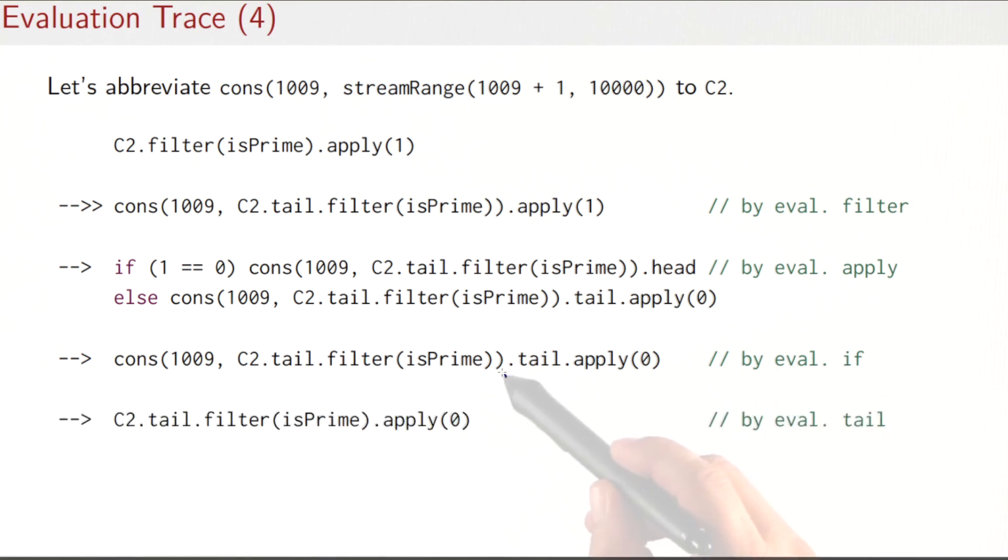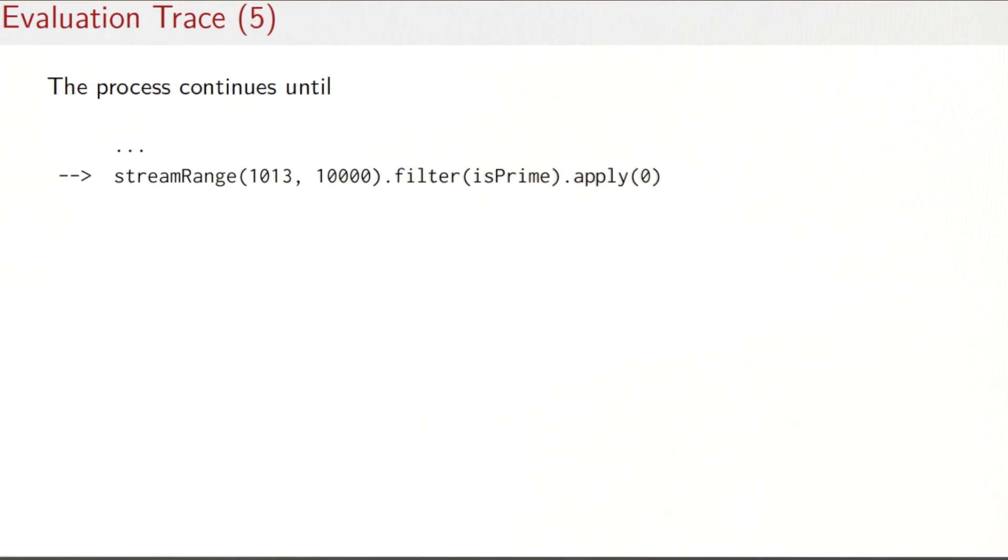Now what we need to do is we need to evaluate tail. That would in turn force the tail part of this cons cell, so we would get C2.tail.filter(isPrime).apply(0). The next thing to calculate again is the tail over here, so that now would give us this next streamRange—the tail part of C2 again, filter(isPrime).apply(0). So what we see is we are again left with essentially the expression we started with, only now we have 1010 here and we have 0 here, where we started with 1000 on the left and 1 on the right. So that process would continue until we hit the second prime number, 1013.